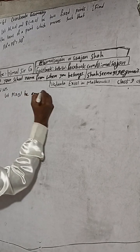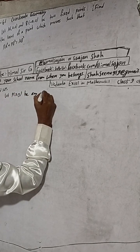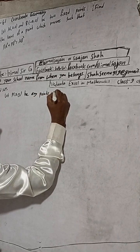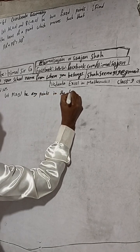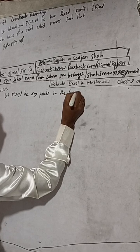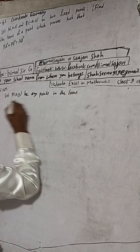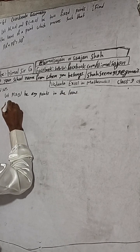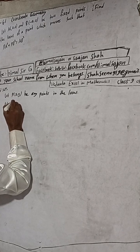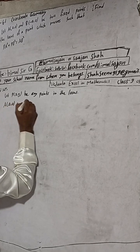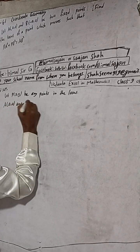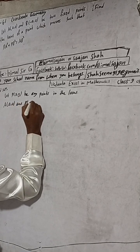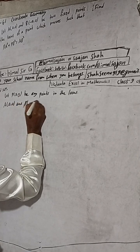...any point in the locus, and A(a, 0) and B(−a, 0) are the two fixed points.